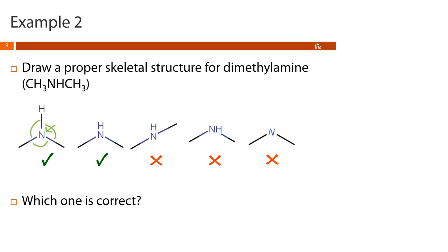The third structure is wrong because the atoms aren't spread out as far as possible — one angle is good but another is too small and another too large. The fourth structure has good angles, but the hydrogen appears ambiguously attached to both the central nitrogen and the terminal methyl group. The fifth structure is missing a hydrogen — remember, hydrogens are only implied when attached to carbons; for any other atom you must explicitly draw the hydrogen.